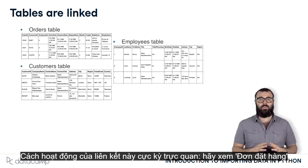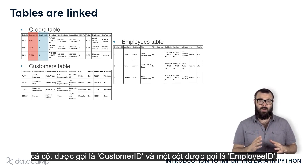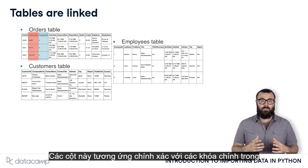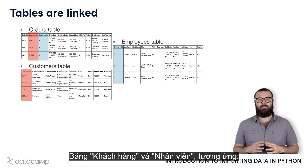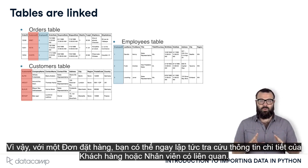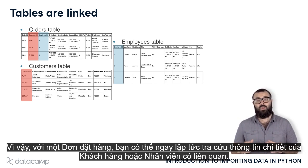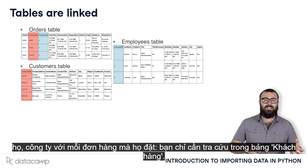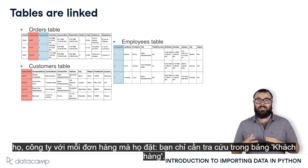How this linking works is ultra-intuitive. The Orders table has both a column called Customer ID and one called Employee ID. These columns correspond precisely to the primary keys in the Customers and Employees tables, respectively. So given an order, you can immediately look up the details of the relevant customer or employee. This is super cool because it means that you don't need to store all the customer details — such as first name, last name, company — with every order that they place.